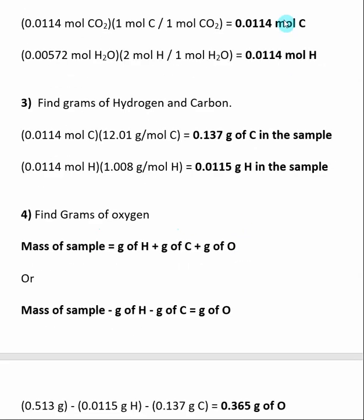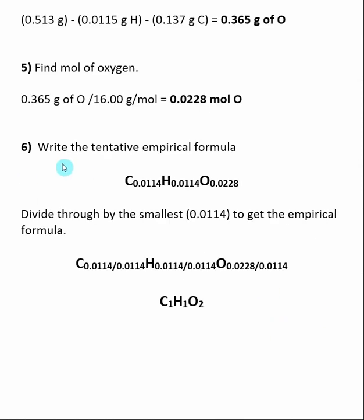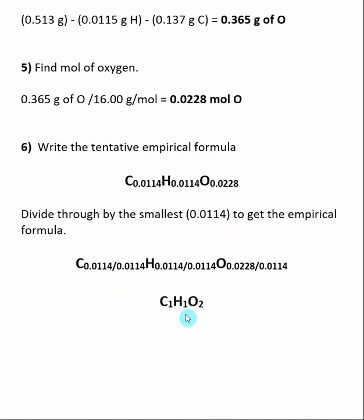Now we have the number of moles of carbon, hydrogen, and oxygen in our original compound. We write a tentative empirical formula with the elemental symbol and the number of moles as a subscript, then divide through by the smallest number — in this case 0.0114. Dividing through by 0.0114, we get the empirical formula C1H1O2. If you determine a number slightly off from a whole number, go ahead and round, because our empirical formula needs to be in whole numbers.